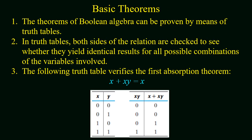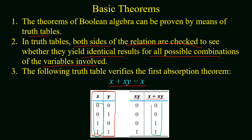A theorem can be verified using hardware-based realization, using Boolean postulates, or using a truth table. In a truth table, both sides of the relation are checked to see if they give the same result for all possible combinations of the variables. For the absorption theorem x + x · y = x, with two input variables giving four combinations, comparing x and x + x · y shows both are identical, proving the theorem.